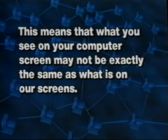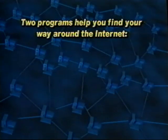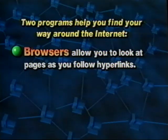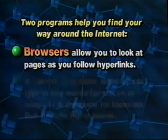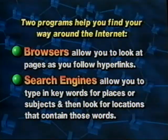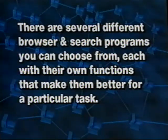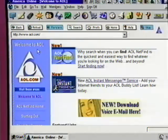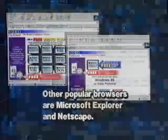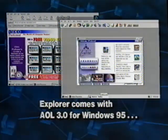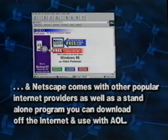There are two basic programs that help with finding your way around this gigantic wealth of information — browsers and search tools. Browsers are programs that allow you to look at pages as you follow your hyperlinks through the web. Search engines allow you to type in keywords for places or subjects that interest you, and they will scour the web looking for locations that contain the words you've typed. Right now we are using AOL's browser. Other popular browsers are Microsoft Explorer and Netscape. Explorer comes with AOL 3.0 for Windows 95, and Netscape comes with other popular internet providers, as well as a standalone program you can download off the internet and use with AOL.